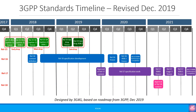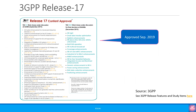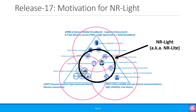3GPP Release 17 content was approved in September 2019 and the specifications are expected to be ready in 2021. Again, there is a long list of features and enhancements, and some of the important ones are listed here. One of the interesting features being studied as part of Release 17 is called NR Lite. The industry feels that the current standards do not cater for industrial IoT scenarios where you don't need all the eMBB, URLLC and mMTC features, but you need some of them.